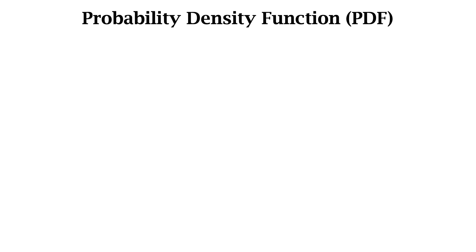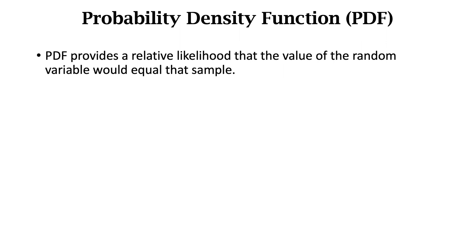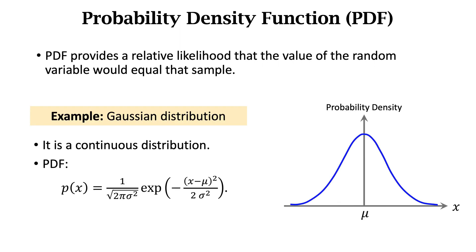The next concept is probability density function, or PDF. PDF provides a relative likelihood that the value of the random variable would equal that sample. The definition is not intuitive. I want to show an example of PDF. A Gaussian distribution, also known as the normal distribution, is a continuous distribution.